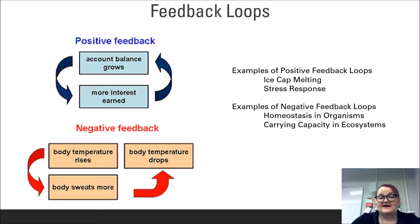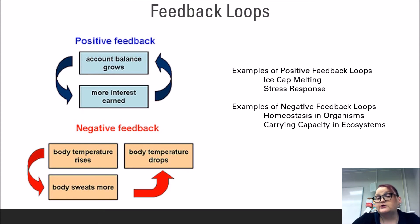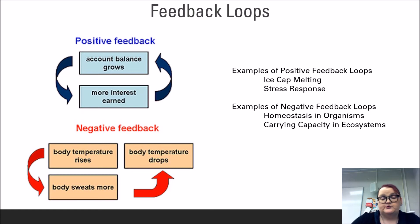Negative feedback loops, on the other hand, maintain conditions at a setpoint. The best example is the homeostatic process of temperature regulation in humans. The standard setpoint is around 37 degrees Celsius, or 98.6 degrees Fahrenheit. When internal temperature goes above this setpoint, the body triggers sweating to release excess heat through evaporation, returning temperature closer to the setpoint. When temperature drops significantly below the setpoint, the body triggers rapid muscle contractions — shivers — to produce excess heat and bring temperature back. Another example in the natural world is carrying capacity, where population numbers oscillate around the setpoint even though they may go above and below it at any given time.